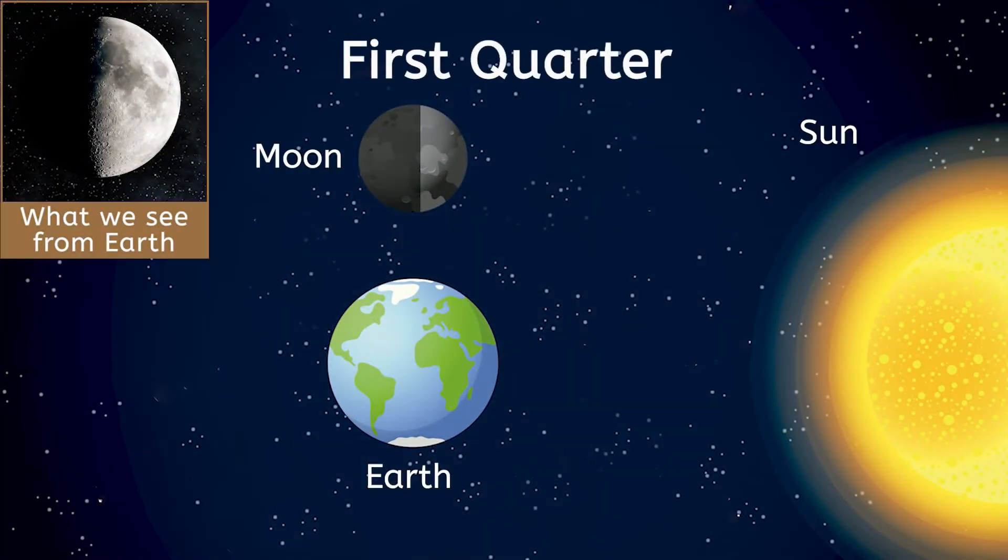During the first quarter, we see only the right half of the moon illuminated when we view it from Earth. But why only half? When the moon is in the first quarter phase, it's one quarter of the way through its orbit, forming a right angle with Earth and the Sun. From this position, sunlight hits the side of the moon that is partially facing Earth. The right half is lit up by the Sun, while the left half remains in shadow.